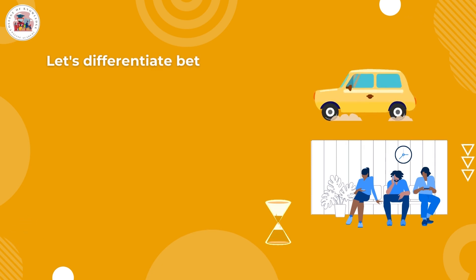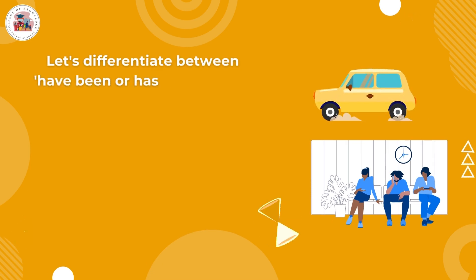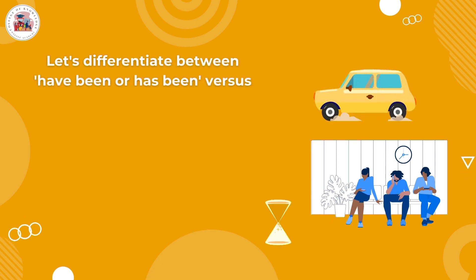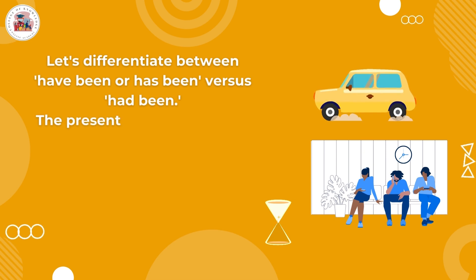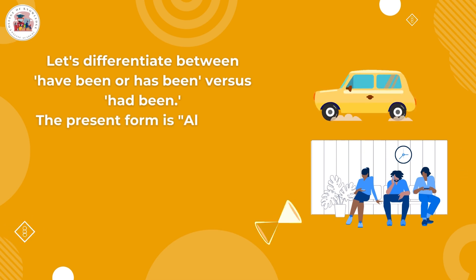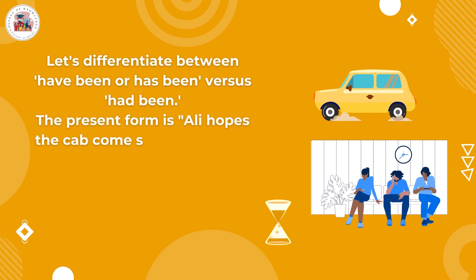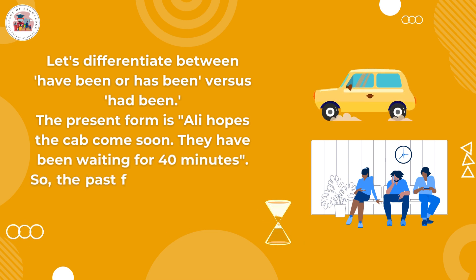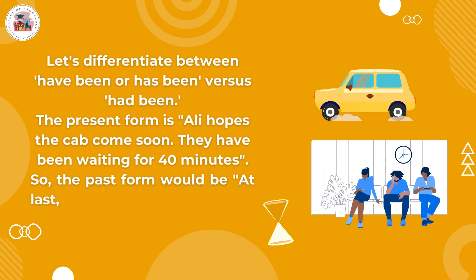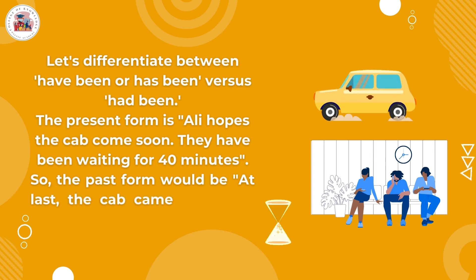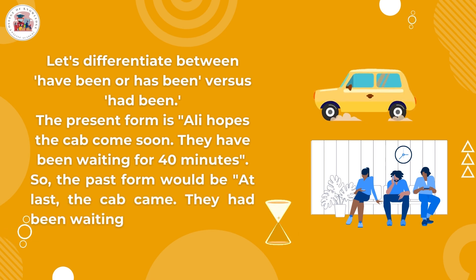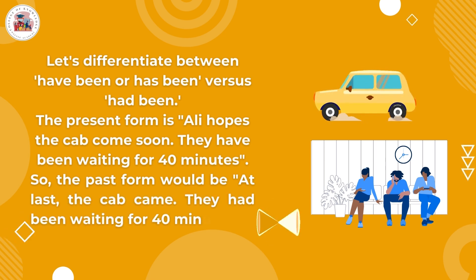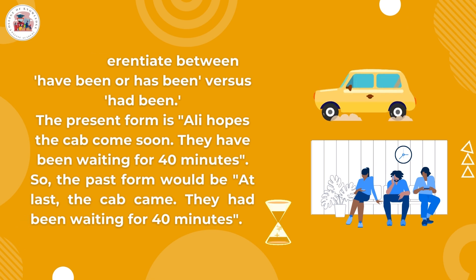Let's differentiate between have been or has been versus had been. The present form is: Ali hopes the cab comes soon. They have been waiting for 40 minutes. The past form would be: At last, the cab came. They had been waiting for 40 minutes.